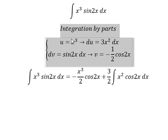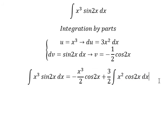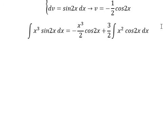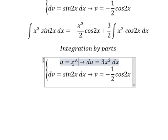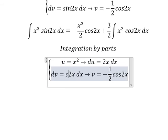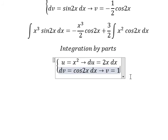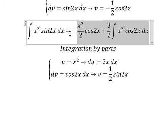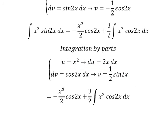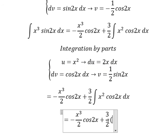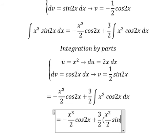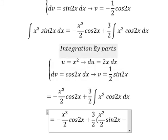Now we use the same technique — integration by parts — but we need to use x squared. This gives 2x. This one is cosine 2x, so this one we have 1 over 2 sine 2x. We have u multiplied by v minus du multiplied by v. 2 divided by 2 gives 1. So we have the integration of sine 2x.